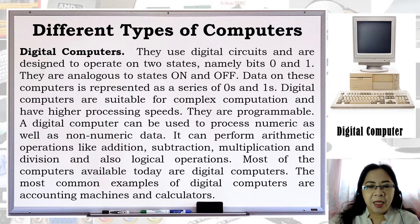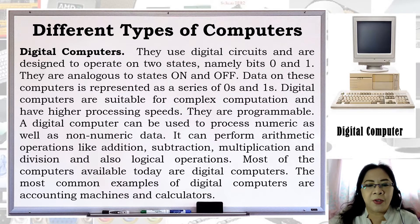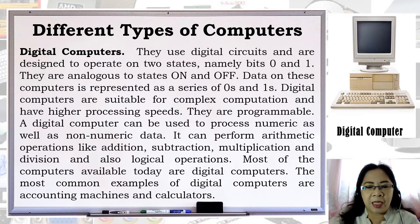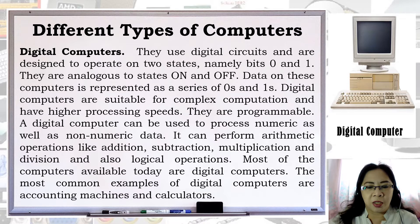Digital computers use digital circuits and are designed to operate on two states, namely bits — zeros and ones — analogous to states on and off. Data on these computers is represented as a series of zeros and ones. Digital computers are suitable for complex computation and have higher processing speeds. They are programmable and can process numeric as well as non-numeric data. They can perform arithmetic operations like addition, subtraction, multiplication, and division, and also logical operations. Most computers available today are digital computers.